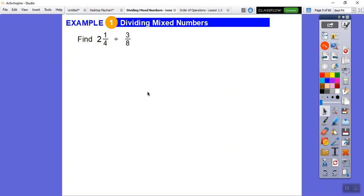I have several examples. First thing we're going to do is write this as an improper fraction. So 4 times 2 is 8, 8 plus 1 is 9. So that'll be our new numerator. 4 times 2 plus 1 equals 9. So this becomes 9 fourths.